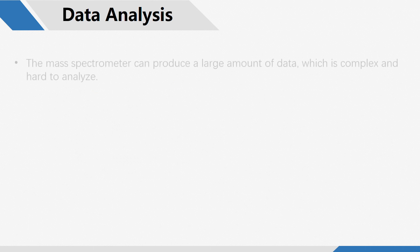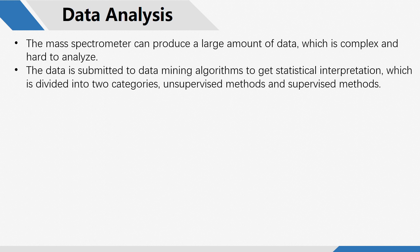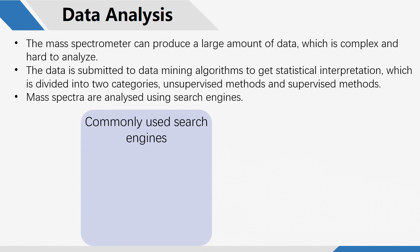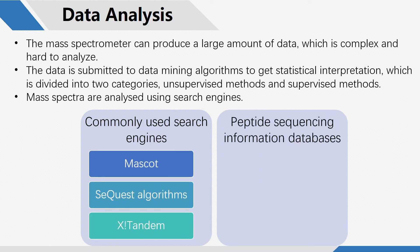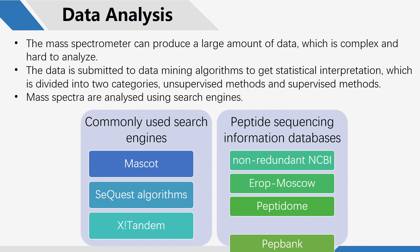The mass spectrometer can produce a large amount of data, which is complex and hard to analyze. The data is submitted to data mining algorithms to get a statistical interpretation, which is divided into two categories: unsupervised methods and supervised methods. Mass spectra are analyzed using search engines. Commonly used search engines include MASCOT, SEQUEST, and X!TANDEM. Peptide sequencing information databases include non-redundant NCBI, AROP Moscow, Peptidome, PepBank, and so on.